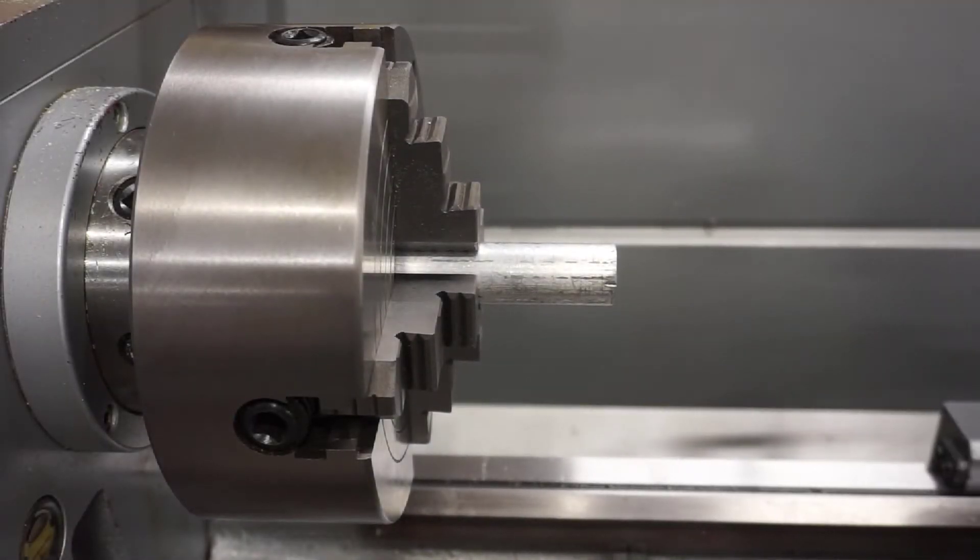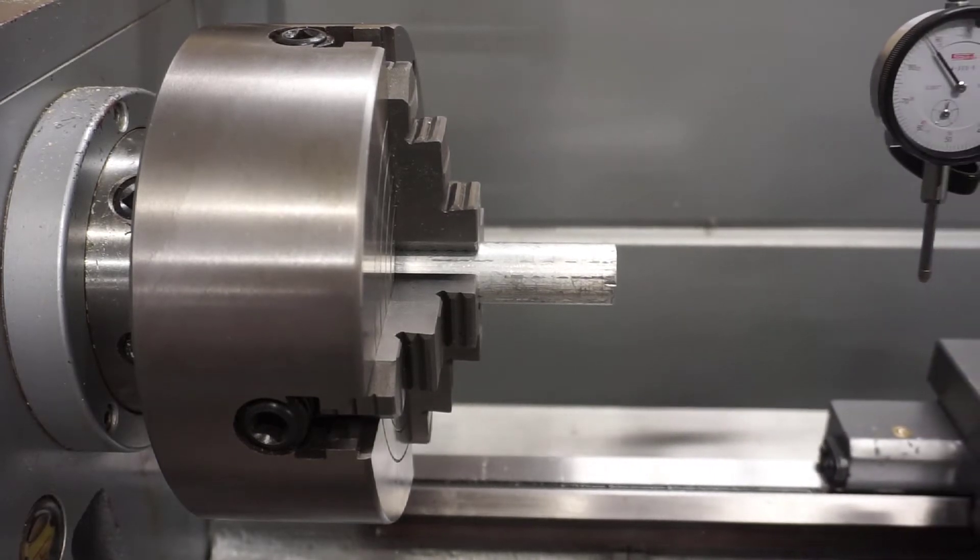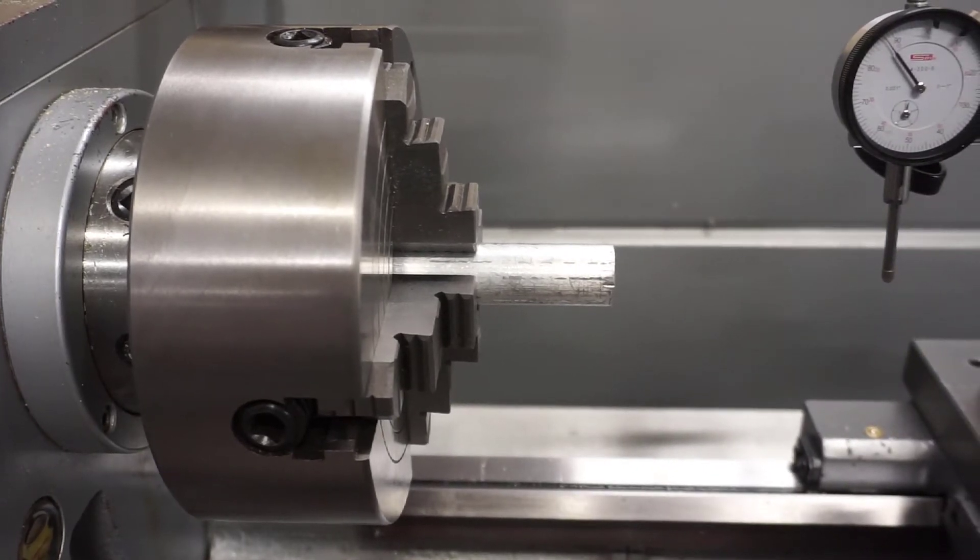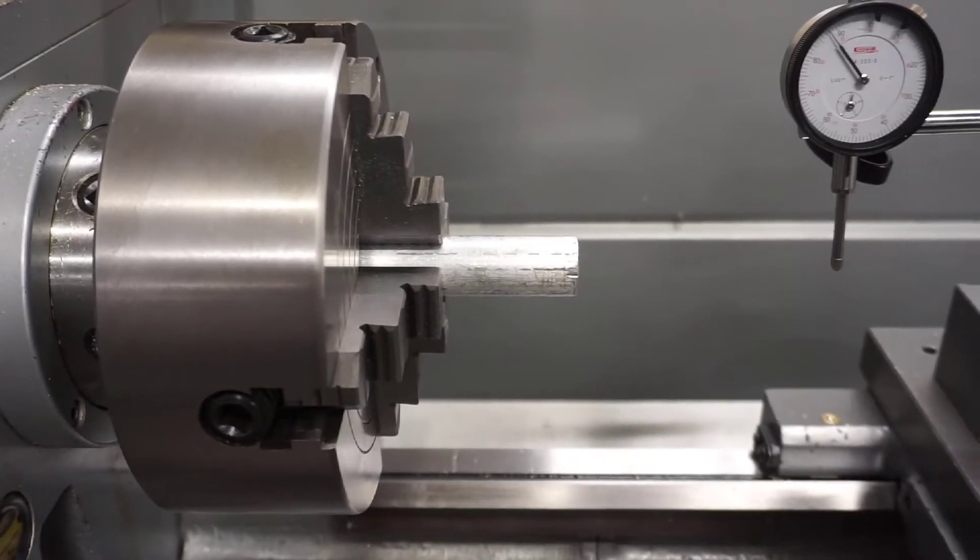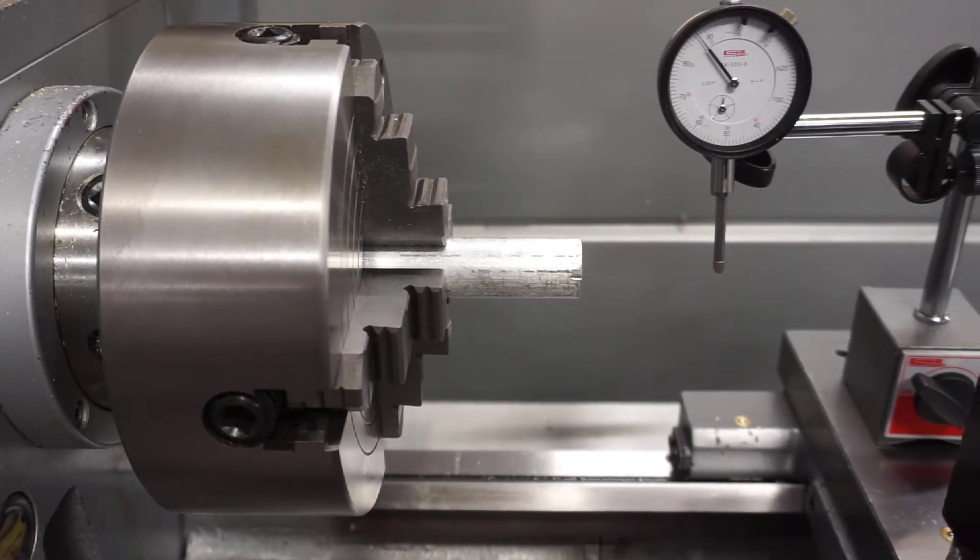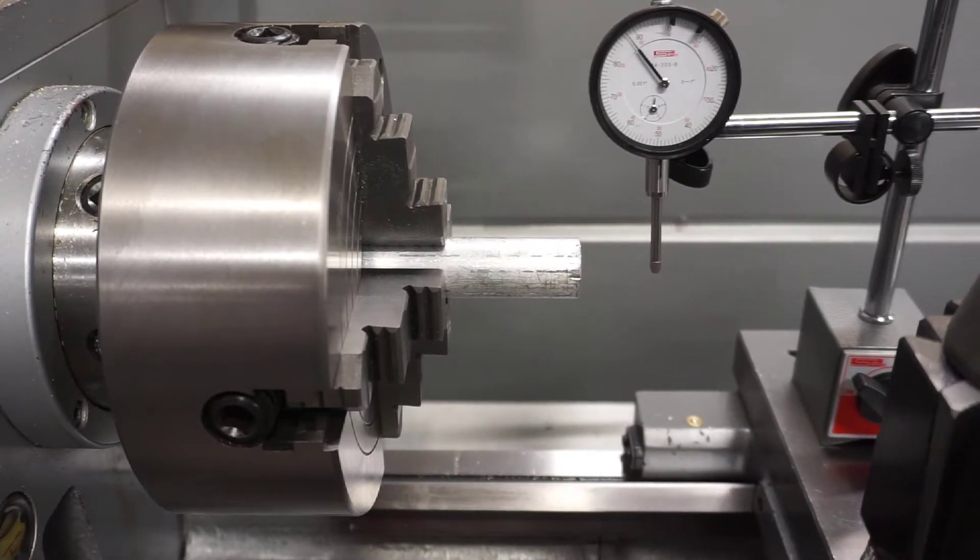Now that you've got the part roughly aligned in the center of the four-jaw chuck, you'll want to use a dial indicator to refine it. To use a dial indicator, place it into a magnetic mount and adjust it so that it is just beneath the top of the part.